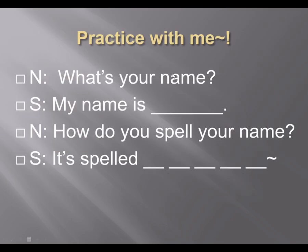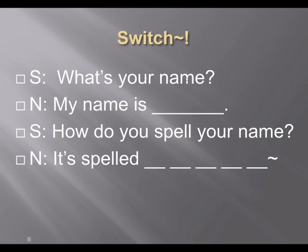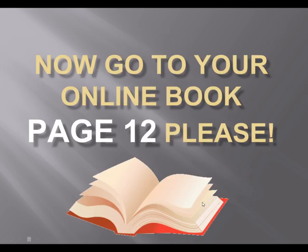Good. So for the last part, just practice with me. I'll ask the question and you can answer — I can't hear you, but I'll pretend I can. So, 3-2-1, what's your name? How do you spell your name? Good job — might be hard to spell your Korean name, I can teach you later. Now let's switch — you ask me the question, say it out loud. 3-2-1. My name is Nick, it's spelled N-I-C-K. That's how we'll be using this dialogue. Now go to your online book and go to page 12 and complete that section. The link will be in the post.